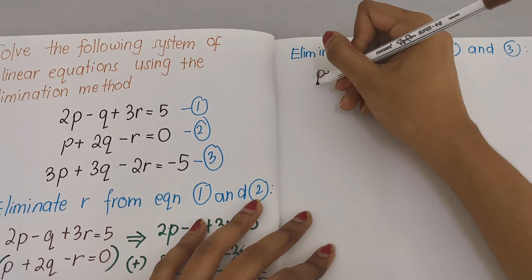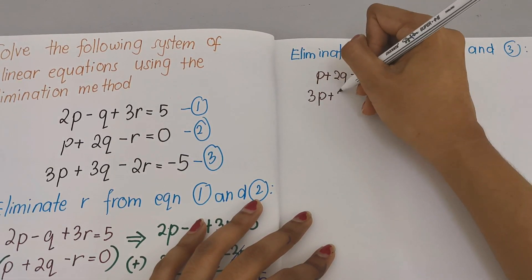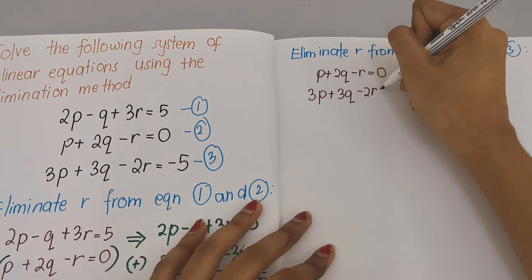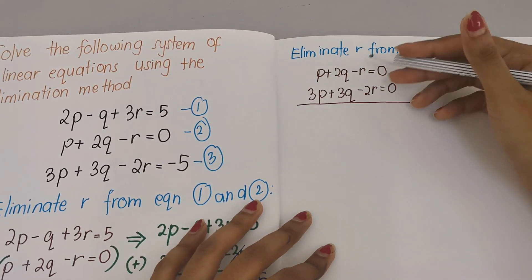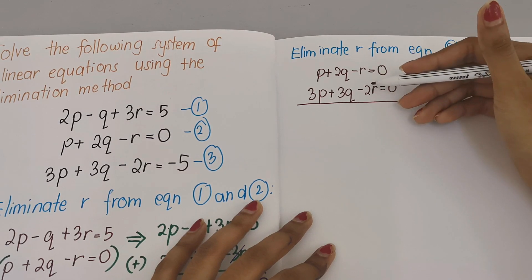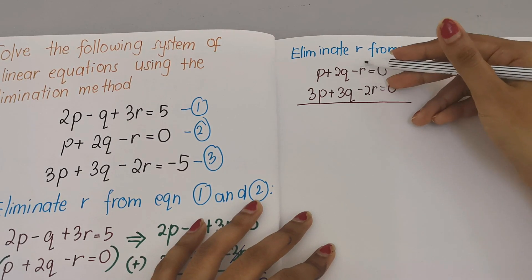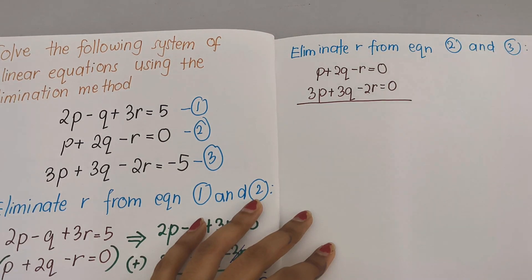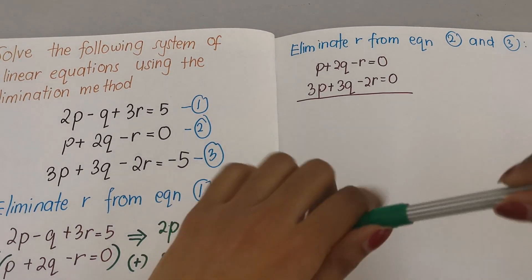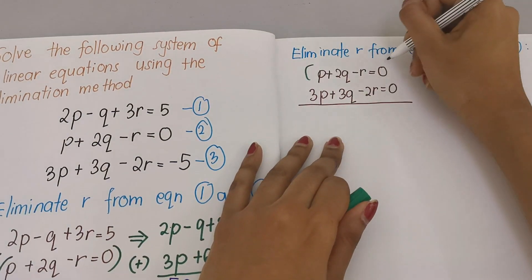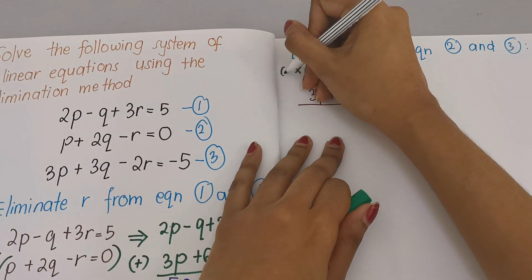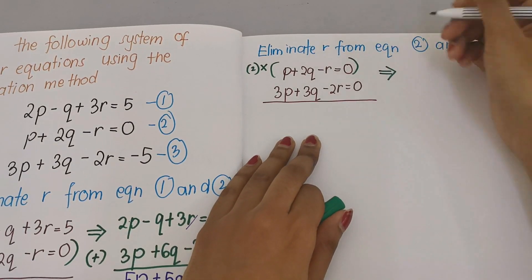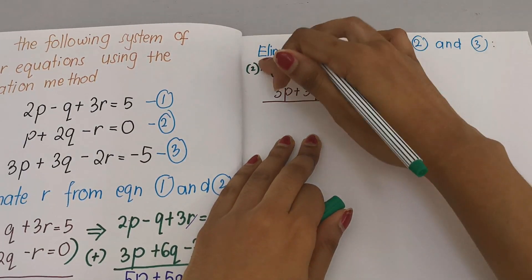Eliminate r from equations 2 and 3. I write equation 2: p plus 2q minus r equals 0, and equation 3: 3p plus 3q minus 2r equals negative 5. Since I want to eliminate r I need a 2r in equation 2, so I'll multiply equation 2 by 2.